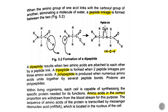Amino acids in the correct proportions are withdrawn from the bloodstream for protein synthesis. The amount and sequence of amino acids in a protein is transcribed by messenger ribonucleic acid, which is called mRNA, and it is located in the nucleus of the cell.